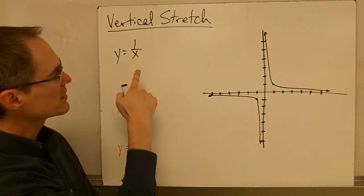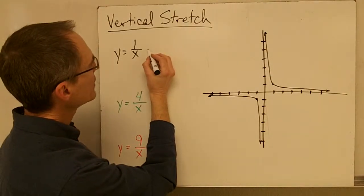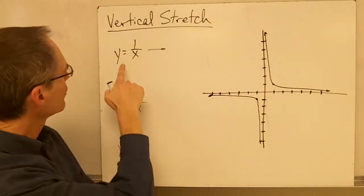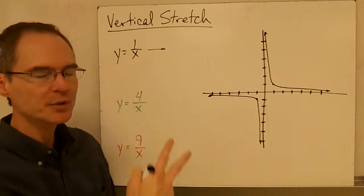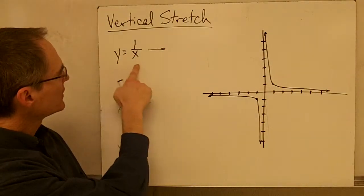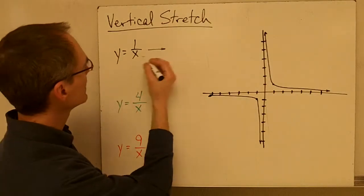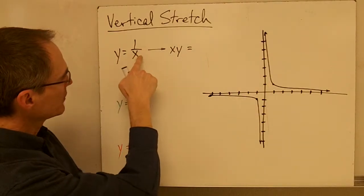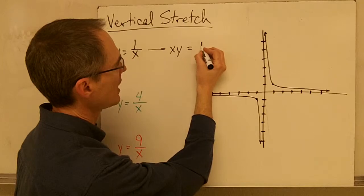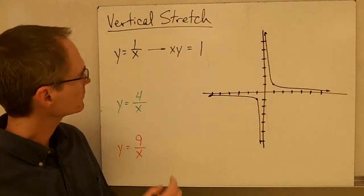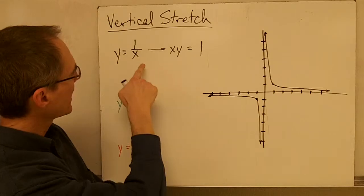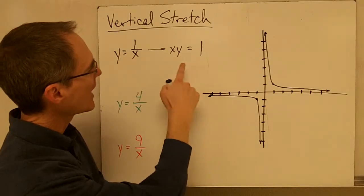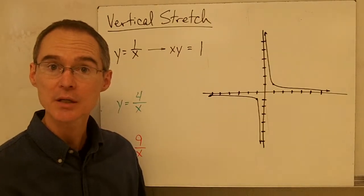In particular, notice that for the parent function y equals 1 over x, we could rewrite this equation. Instead of writing it as y equals 1 over x, if we multiply both sides of this equation by x, then the x's cancel out and we essentially get x times y equals 1. This is just a different way of saying that in the inverse variation function, the relationship between x and y is that x times y always has to be equal to 1.